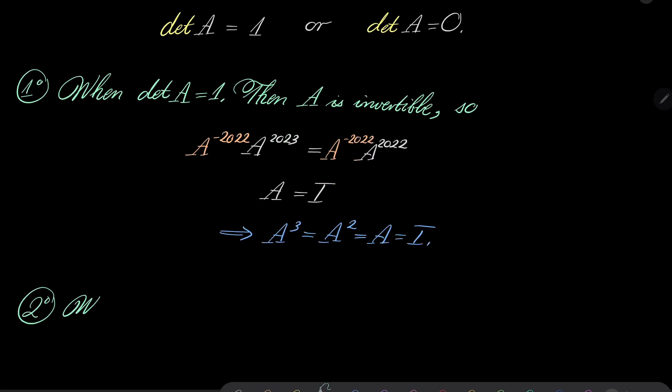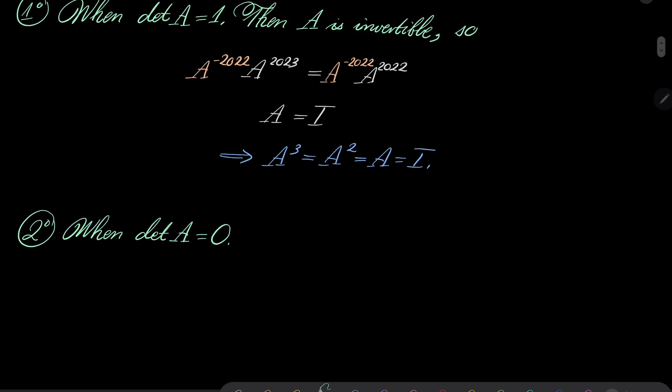Second case. So this is the determinant of A equals 0. Well, notice that then we can write A equals P J, P inverse, where J, well, we know that it's either this matrix or this matrix. All right, let's consider these two cases separately.